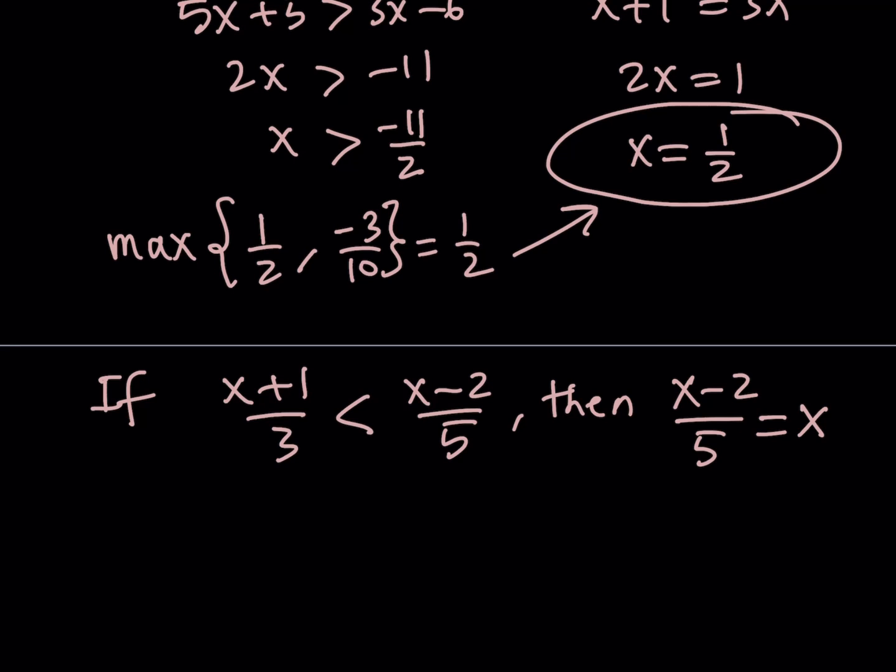So I'm going to do the same thing, but you don't have to go through all of this because we know that the result is going to be just reversed from here. So you should be getting something like if x is less than negative 11 halves, then x should be what? Well, we're going to find out. x minus 2 is equal to 5x, 4x is equal to negative 2, and x is equal to negative 1 half.